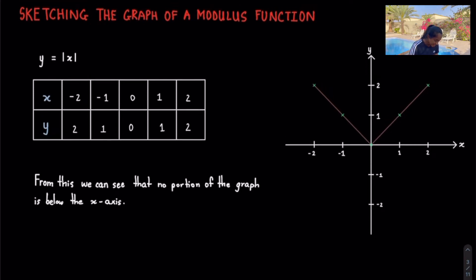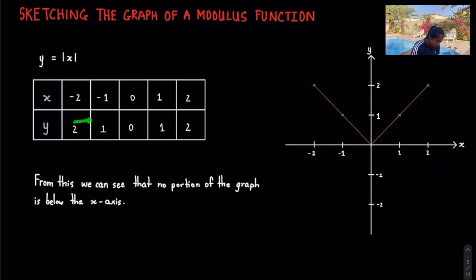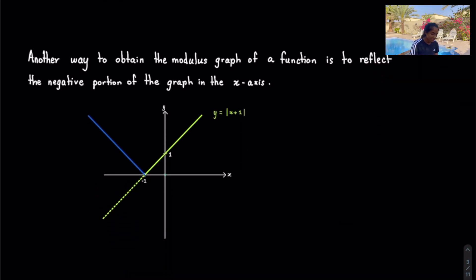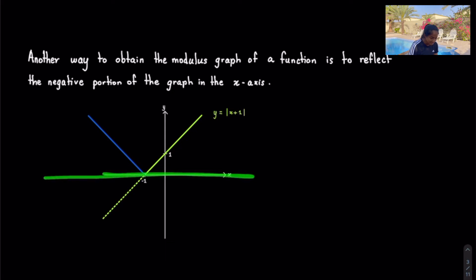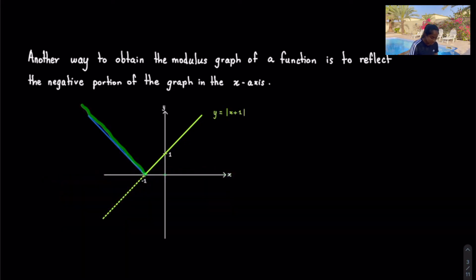We can see that no portion of the graph is below the x-axis, meaning none of the y values are negative. All y values are positive, which is why nothing sits below the x-axis. Another way to obtain the modulus graph is to reflect the negative portion of the graph in the x-axis — anything that goes below the x-axis gets reflected above it, like this.